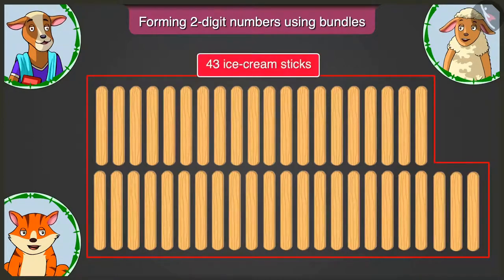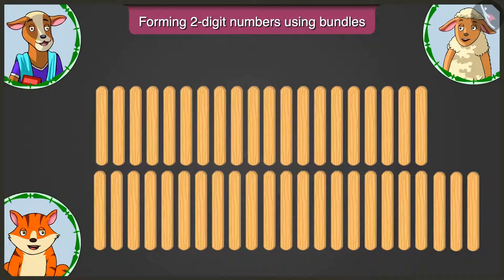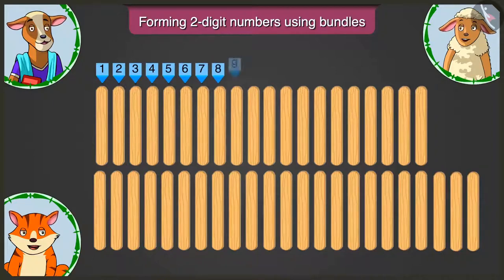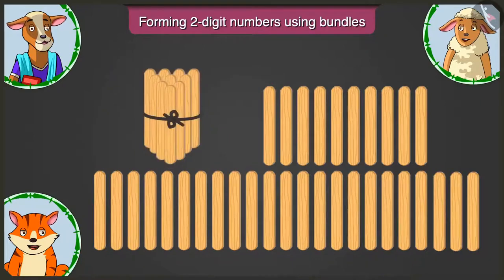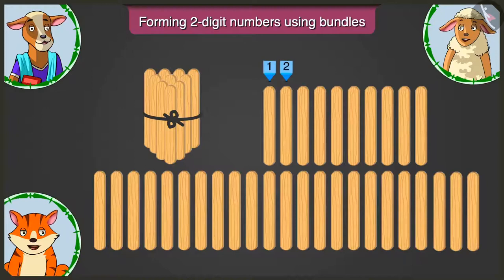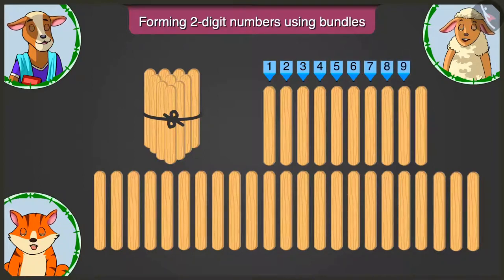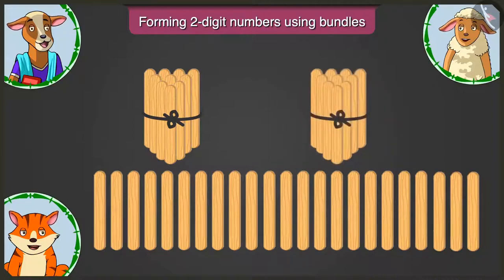There are forty-three ice cream sticks. First of all, make one bundle of tens out of them — one, two, three, four, five, six, seven, eight, nine, and ten. Here is one bundle of tens. Come on, Billy — now make the second bundle of tens from the remaining sticks. One, two, three, four, five, six, seven, eight, nine, and ten. This is the second bundle of tens.